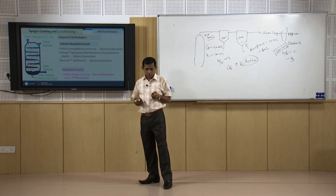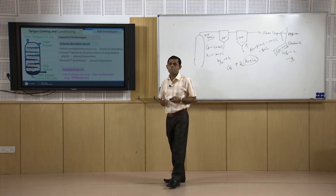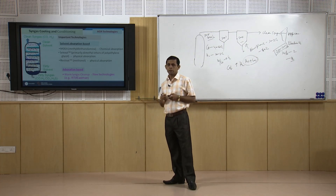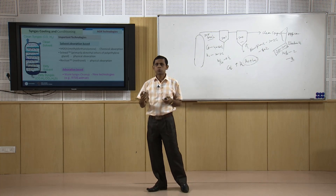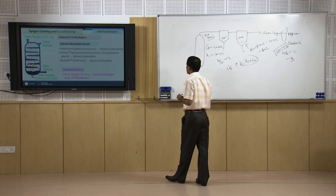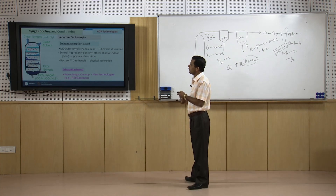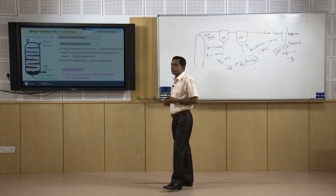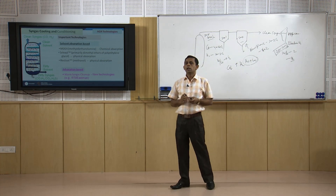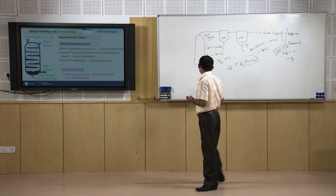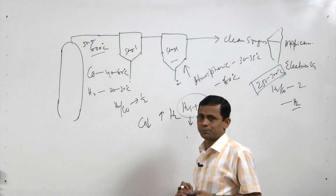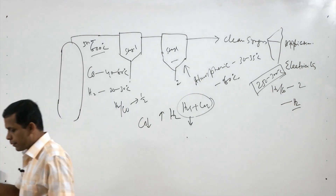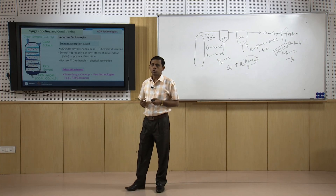Most old commercial plants are based on absorption technology. There are three major absorbents reported and used commercially: MDEA (methyl diethanol amine), Selexol (primarily dimethyl ethers of polyethylene glycol), and Rectisol (refrigerated methanol). Rectisol and Selexol capture H2S and CO2 by physical absorption, whereas MDEA captures these impurities through chemical absorption.